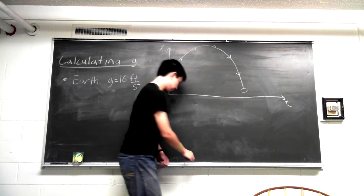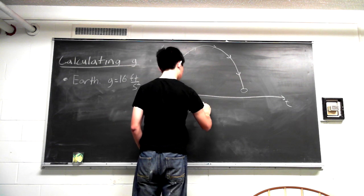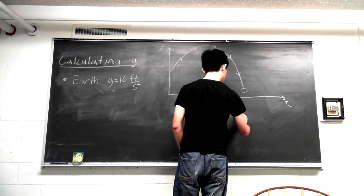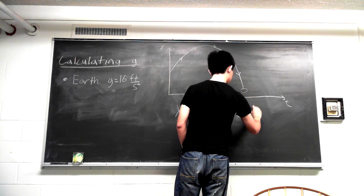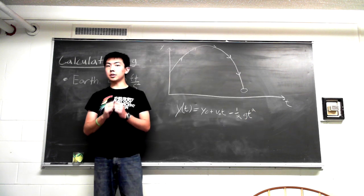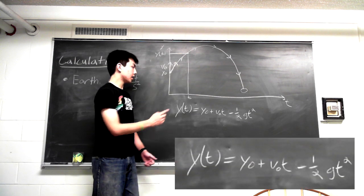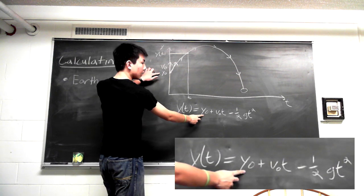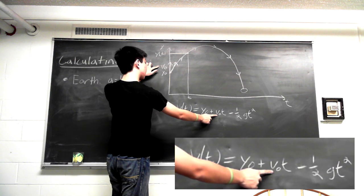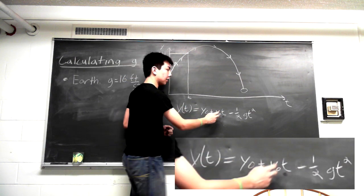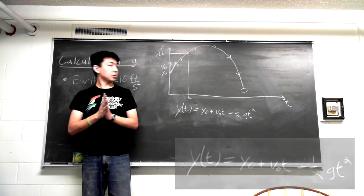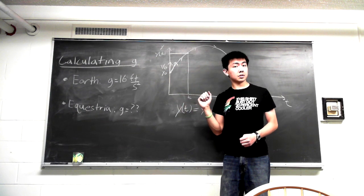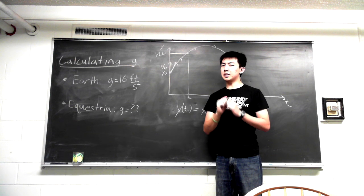Specifically, we will use the equation: Y(T) equals Y0 plus V0 times T plus one-half minus one-half G T squared. This equation calculates the height of an object at any particular point in time, given its initial height, its initial upward or downward velocity, T or the time, and of course G. Now, we can use this same equation to calculate G on the surface of the equestrian planet. But first, we have to make a key assumption.